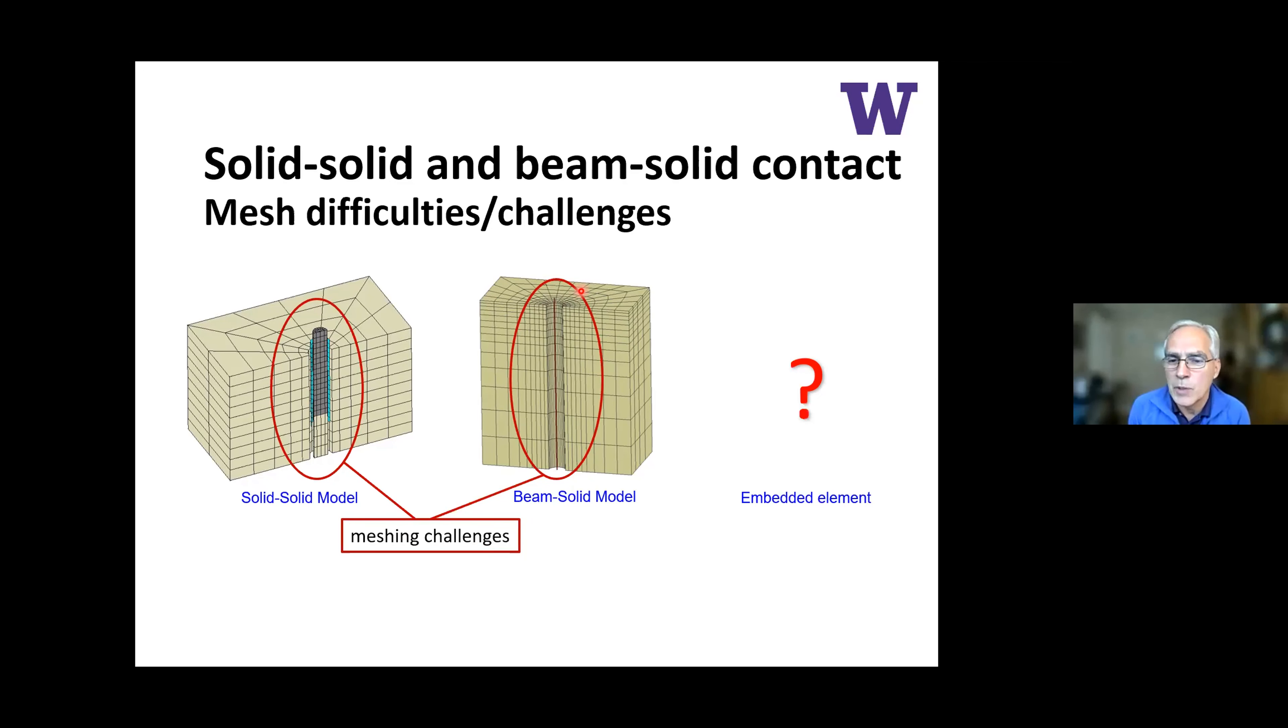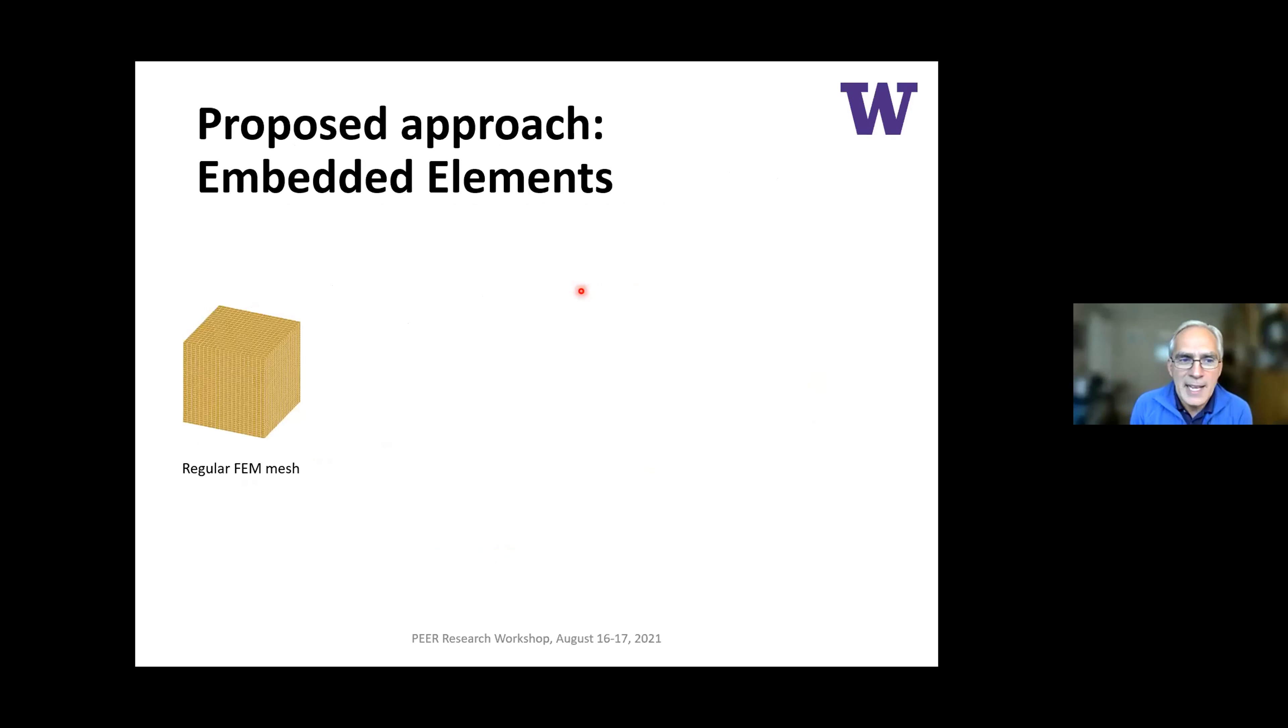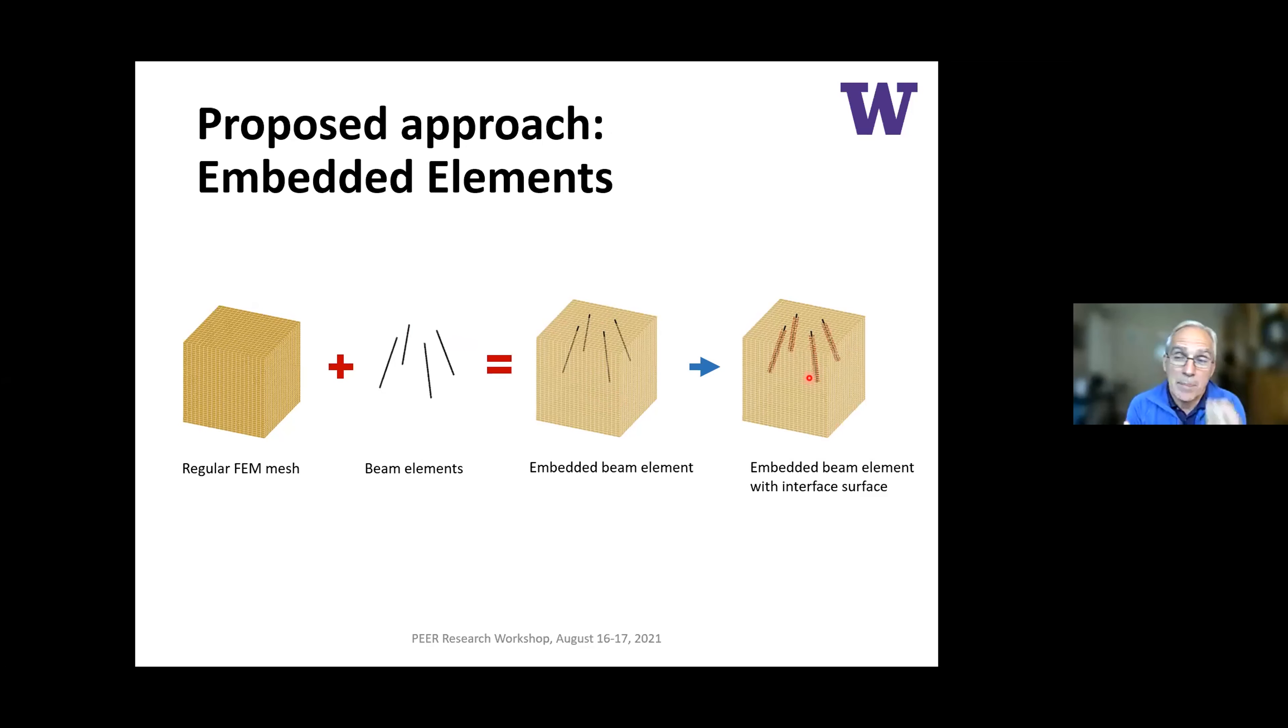For one pile, it's not a big deal. But imagine that you have a complex domain with several piles, pile groups. Then the meshing becomes a problem. That's why we are trying to propose this idea of an embedded element. Imagine that you have a regular mesh that is easy to mesh, very regular system. Then we have the beam elements that we want to use. The idea is to embed these beam elements into this regular mesh. The problem is that the beam elements don't have this interface surface that represents the interaction between the pile and the soil. So the idea is how to include now that interface that belongs to the pile and assign to this interface the interaction condition. That's the embedded element that we are interested in.